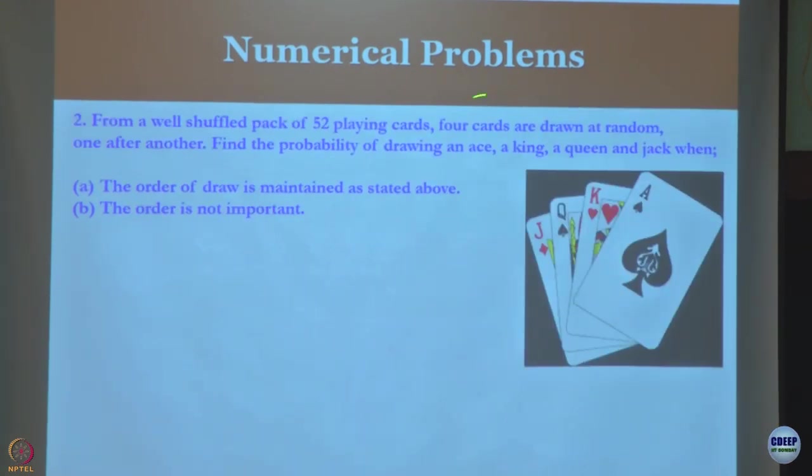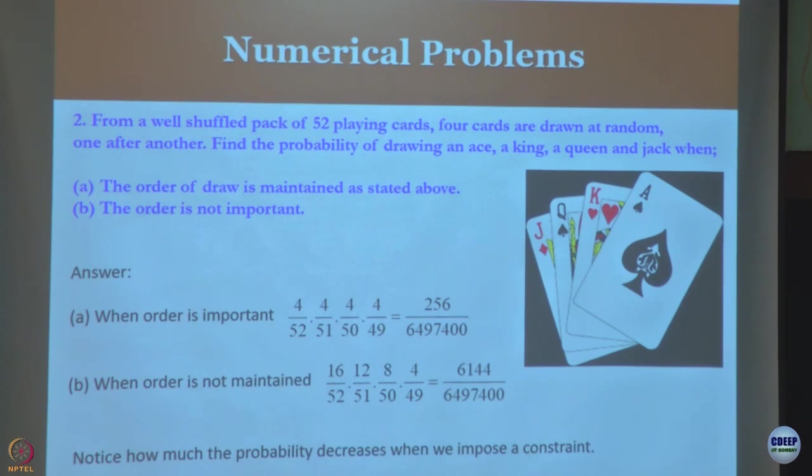Another thing is from a well-shuffled pack of 52 playing cards, find the probability of drawing an ace, a king, and a queen. The order of draw is maintained - you are doing that combinatorics and permutation. The order is not important. When order is important, you have many more outcomes. When order is not important, you have less number. When order is not maintained, every time you have a lot more outcomes.